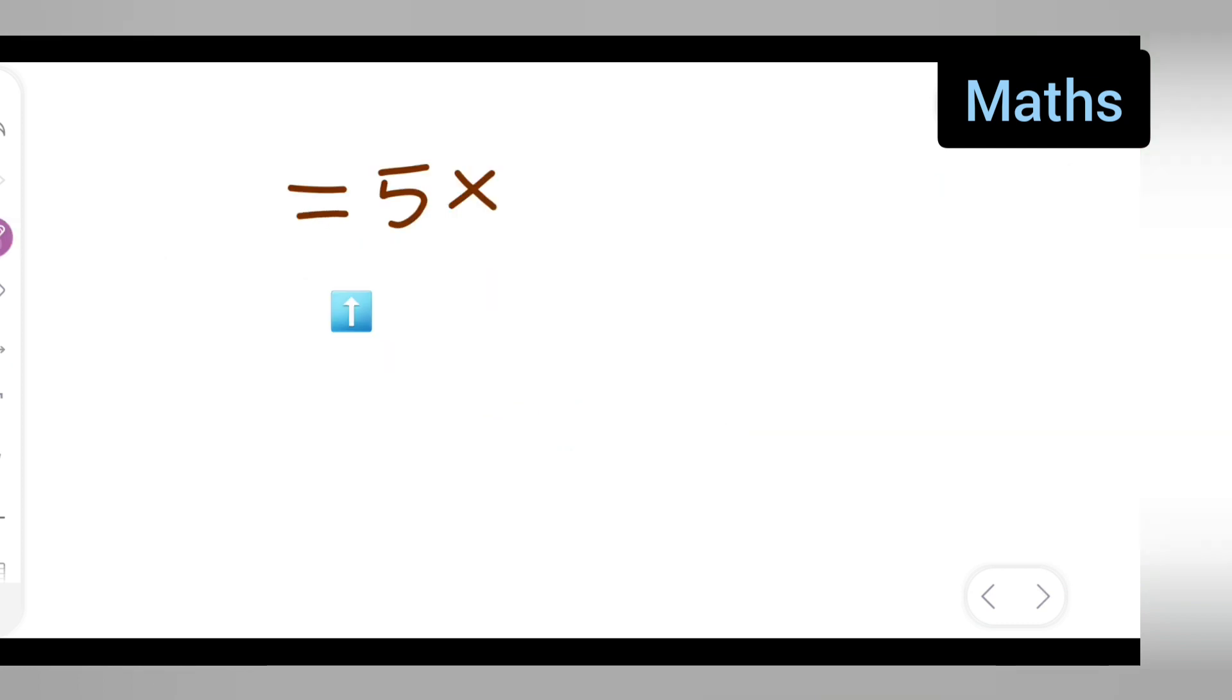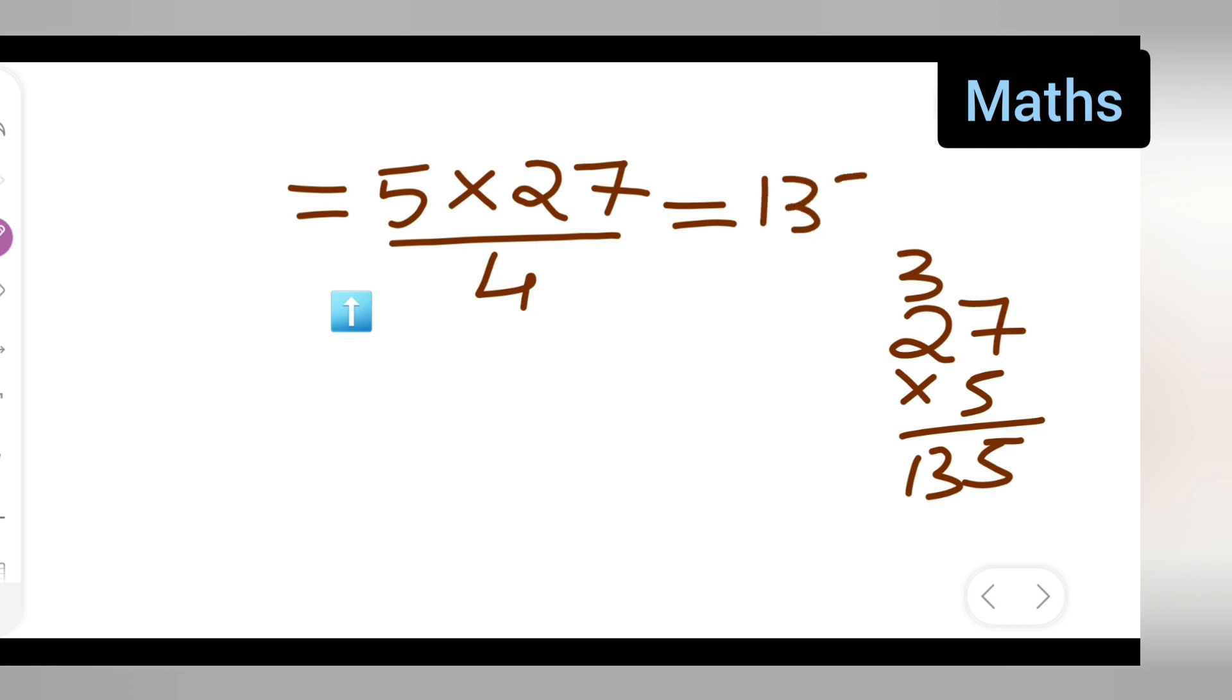Multiply 27 multiplied by 5. So 5 times 7 is 35, 5 times 2 is 10, 11, 12, 13 - you're going to get 135. So the answer is 135 upon 4.